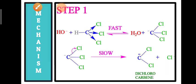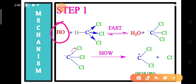Now we go to the mechanism. We can divide the Reimer-Tiemann reaction into two steps for easy understanding. In step one, we form the electrophile. The hydroxide ion from the base takes the H+ ion from chloroform, also called trichloromethane, which has three chlorine atoms present.